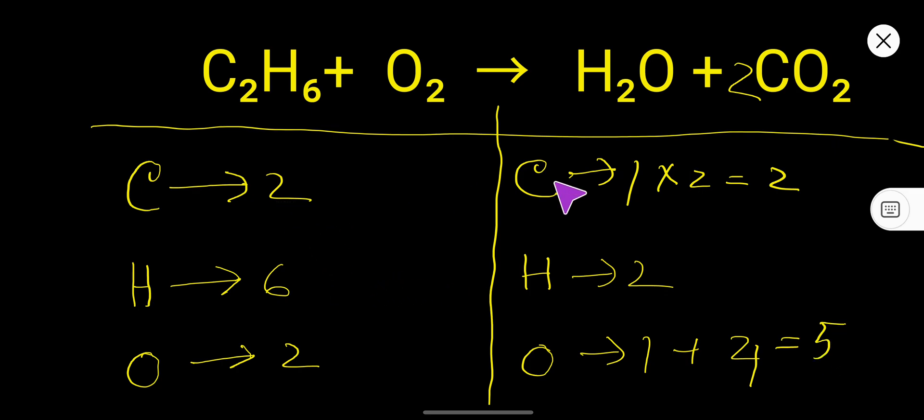Now here carbon 2, 2 is balanced. Here hydrogen is 6, here 2. So to balance hydrogen simply you can multiply here by 3 that gives you 6.